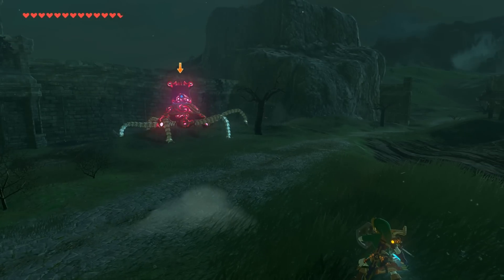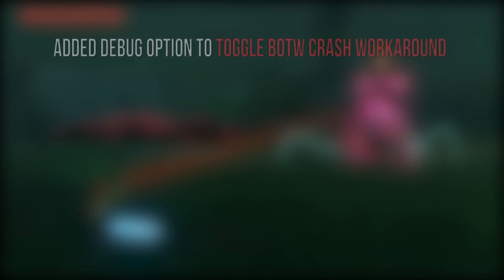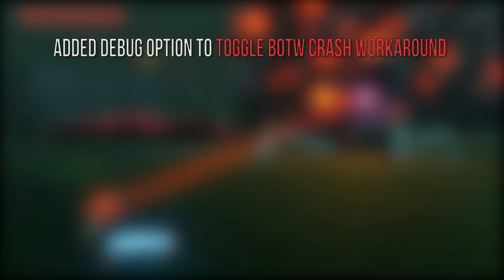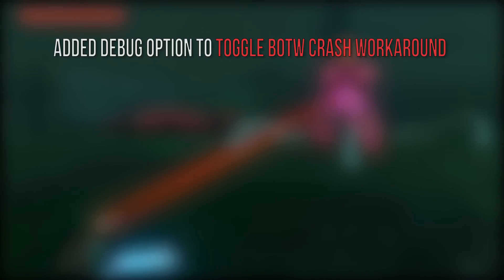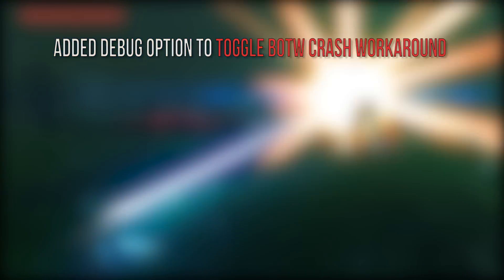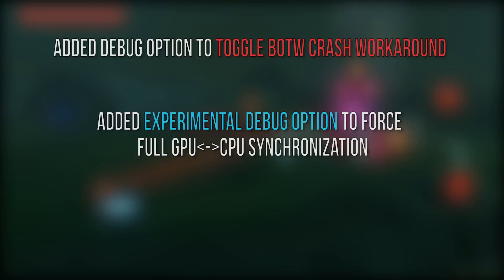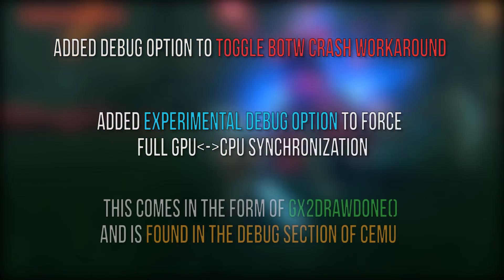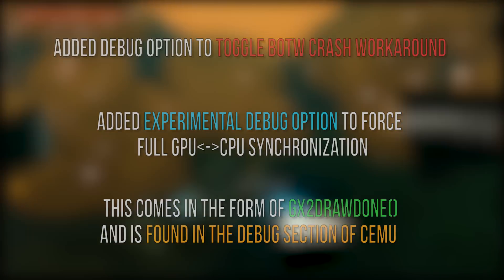Let's move on to some of the GX2 graphic rendering changes. They have added a debug option to toggle the Breath of the Wild crash fix workaround that was added in CMU version 1.8.1 T1 and CMU version 1.8.2. An experimental debug option to force full GPU/CPU synchronization has been added, which can be found in the debug menu in the form of GX2 Draw Done.